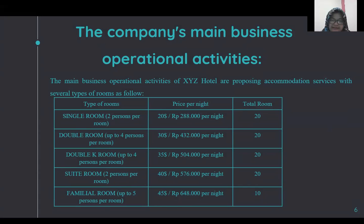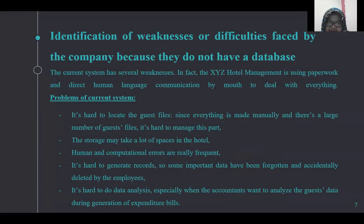The next topic is the company's main business operational activities. The main business operational activities of XYZ Hotel are proposing accommodation services with several types of rooms. The current system has several weaknesses — the XYZ Hotel management is using paperwork and direct human verbal communication to deal with everything.